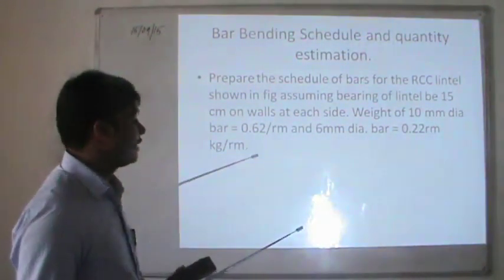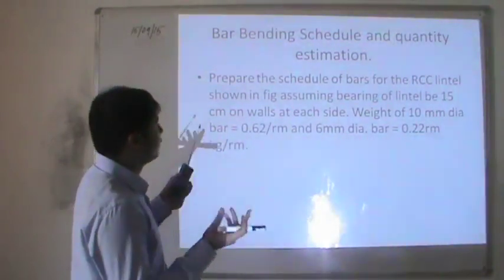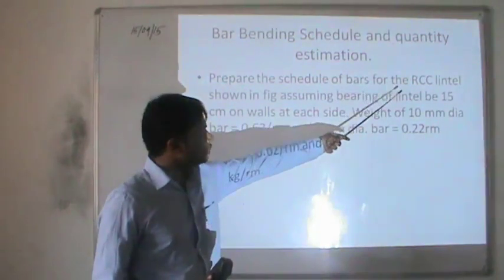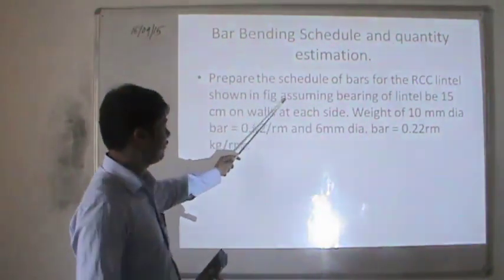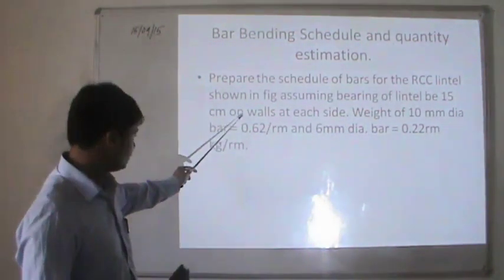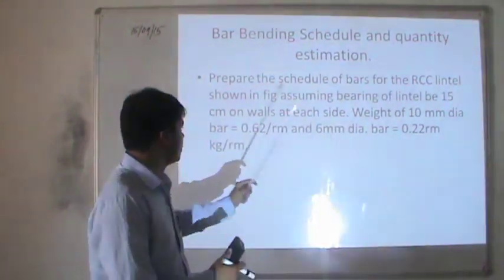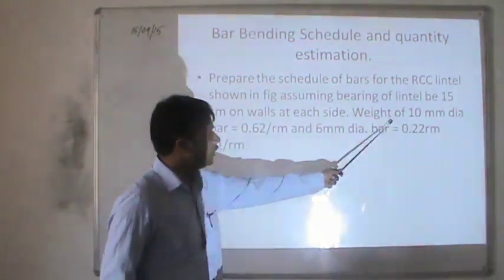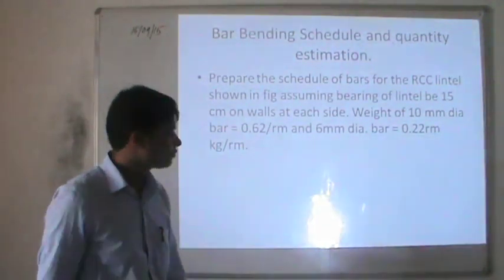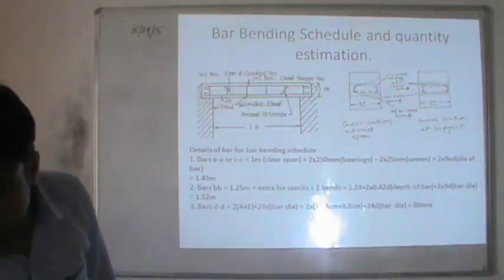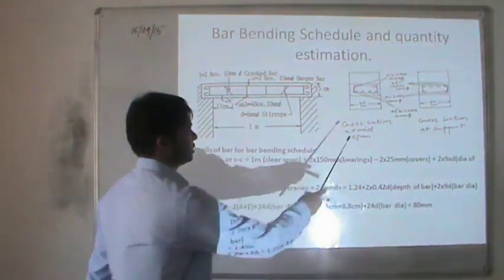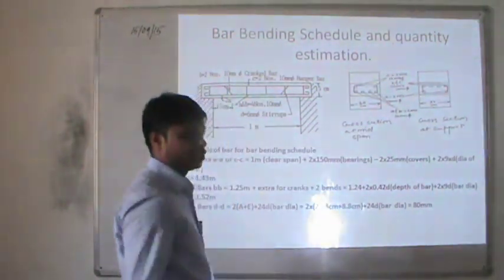In the estimation of bar bending, we have been given a problem: prepare the schedule of bars for the RCC lintel shown in the figure, assuming bearing of the lintel to be 15 cm on each wall on both sides. The weight of 10 mm dia and 6 mm dia bars is already given in kg per running meter. This is the lintel we are talking about — the cross section, clear span, section, and support.